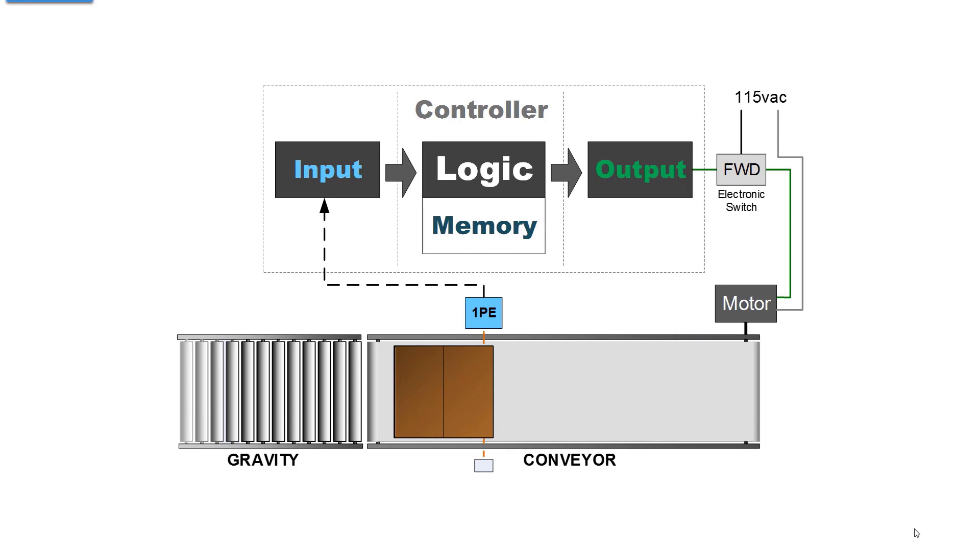The logic that was in your head, that's now cloned into the controller, states that if the photo sensor is not blocked, the conveyor runs. If the photo sensor is blocked, then the controller, through the output, releases the contacts, and the conveyor motor de-energizes, and there sits the object.